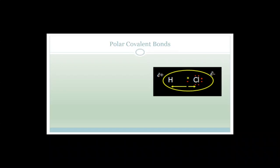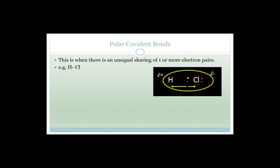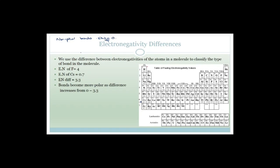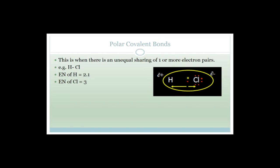Let's look at an example of a polar covalent bond — for example, hydrogen chloride. This is when there's an unequal sharing of one or more electron pairs. If you look at hydrogen chloride, the electronegativity of hydrogen is 2.1 and the electronegativity of chlorine is 3.0. So we've got 2.1 and 3. The difference between them is 0.9, so this is a polar covalent compound.